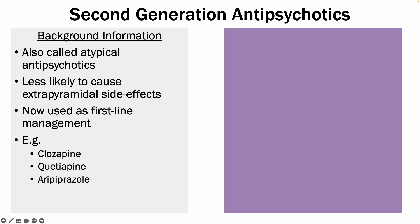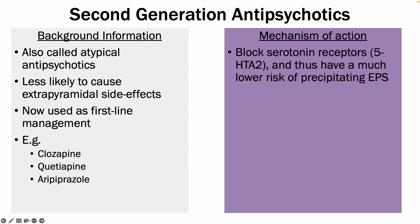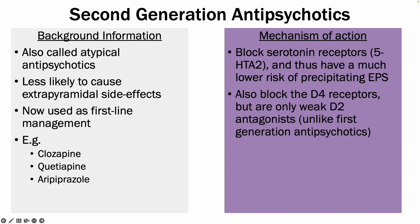In terms of mechanism of action, they block the serotonin receptors — specifically the 5-HT2A receptors — and have a much lower risk of precipitating extrapyramidal symptoms. They do block dopamine receptors, but they mainly block the D4 receptors, not the D2 receptors, which means they are less likely to precipitate extrapyramidal symptoms.